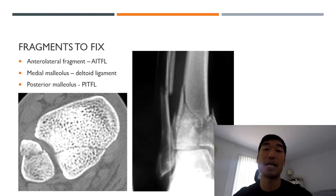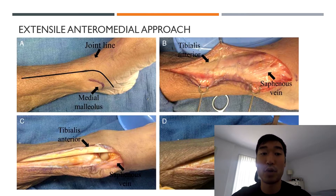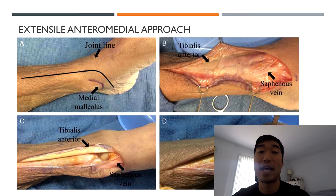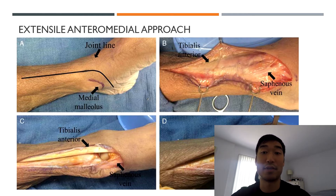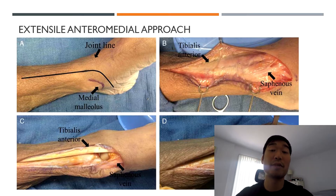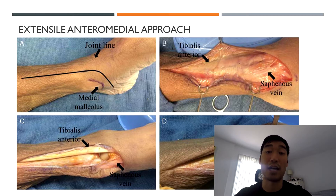The anterior medial approach basically starts from one centimeter lateral to the tibial crest, extends to the ankle joint, makes about a 110-degree turn, and ends at the tip of the medial malleolus. During superficial dissection you want to be careful of the saphenous vein, and as you go deeper you will see the extensor retinaculum, which you'll cut. You then retract the tibialis anterior muscle laterally and you will see the plafond, the talus, and the medial malleolus. The obvious limitation of this approach is location — you won't have visualization of the anterolateral or posterolateral areas.